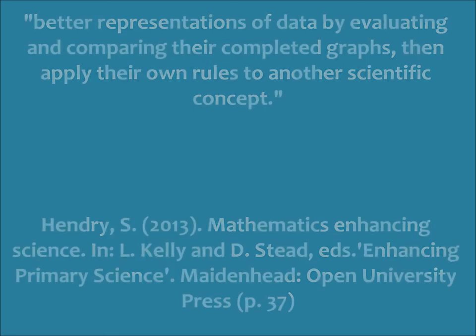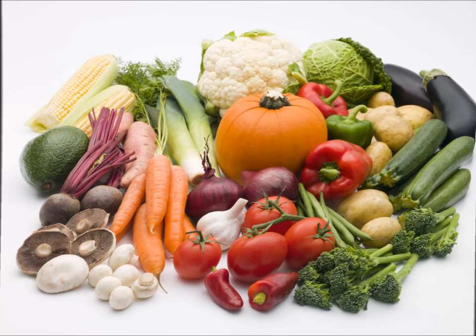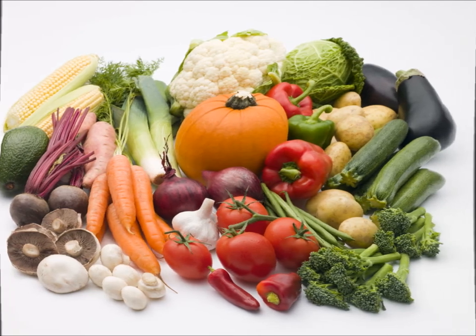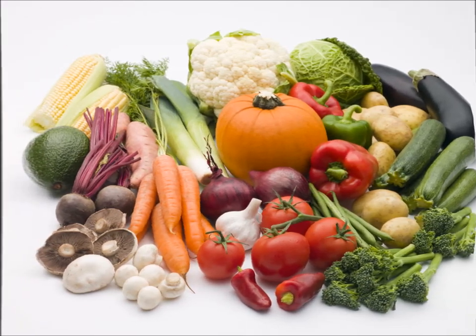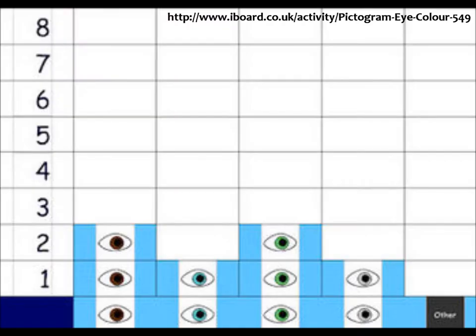In fostering this approach, learning is child-led and they are encouraged to further their understanding through self-evaluation and discovery. Henry draws upon the example of producing graphs to depict foods found in the home and linking this to a topic on healthy eating. One popular topic for the youngest children at the beginning of their reception year is learning about themselves. Discrete data could be collected about hair colour, eye colour or shoe size, for example, and displayed in the form of a pictogram.